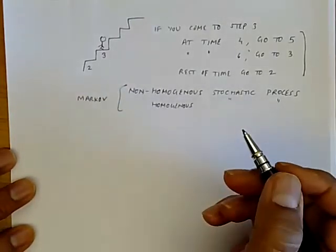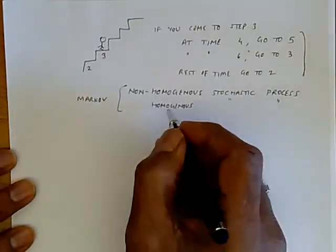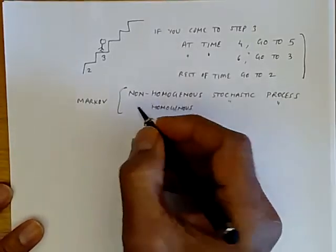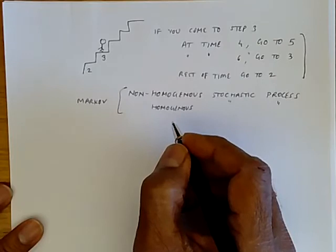So these are actually both Markov processes. It's just that one is a non-homogeneous Markov process, and one other is a homogeneous Markov process. Homogeneous means this, we automatically mean time homogeneous Markov process.